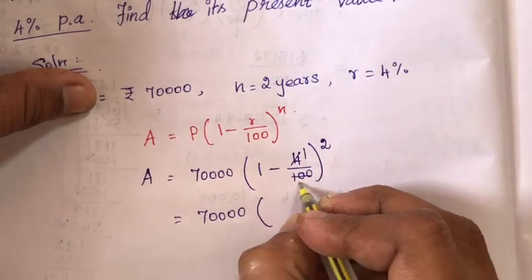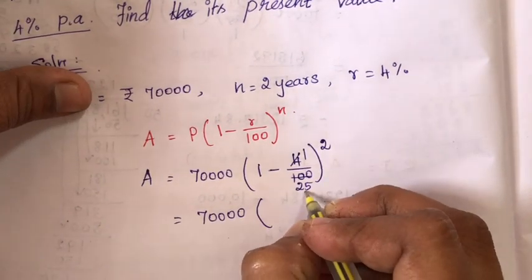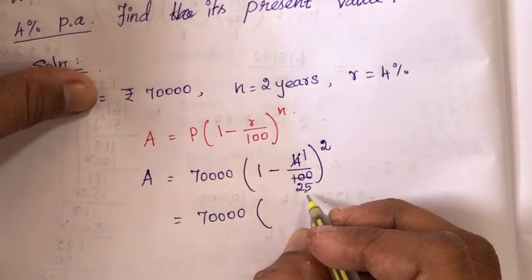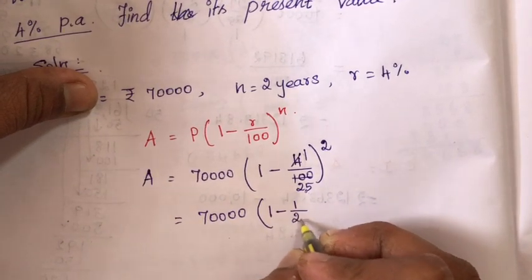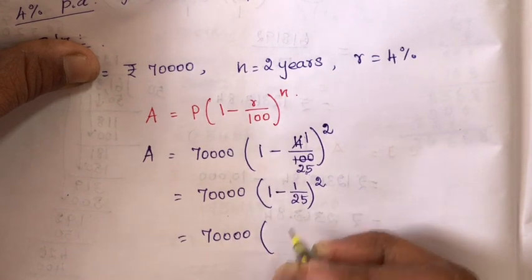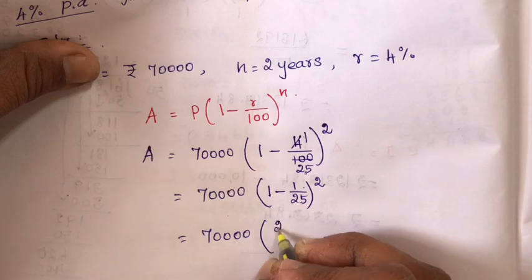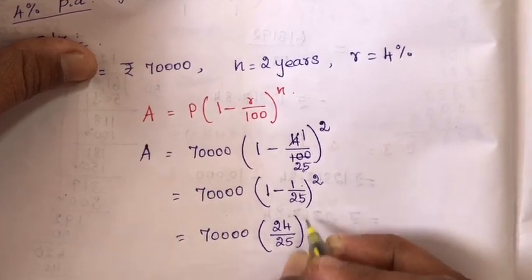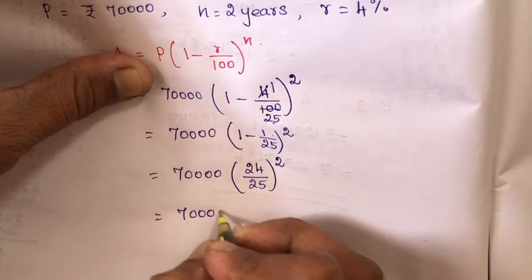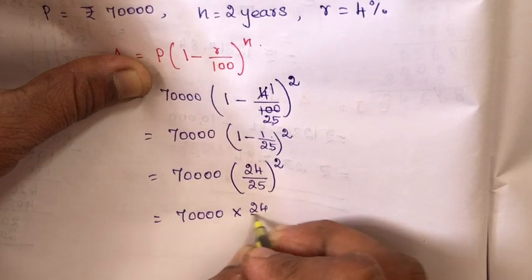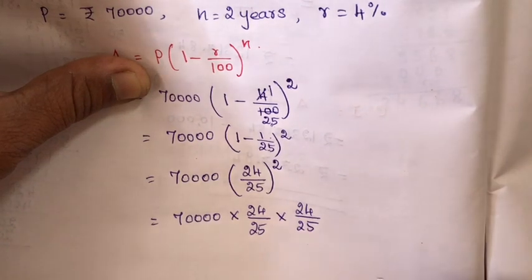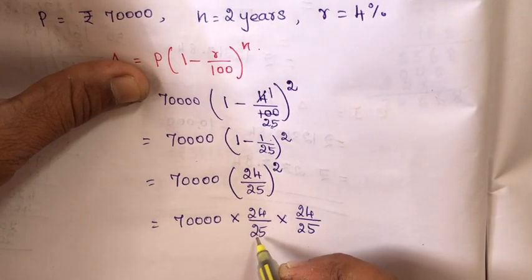That simplifies to 70,000 into 25 minus 1, that is 24 by 25, the whole square. That is equal to 70,000 into 24 by 25 into 24 by 25.